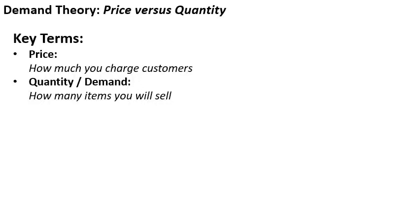The quantity — sometimes known as demand, which is why this is demand theory — is the number of items you will sell, how much of the stuff you're going to be able to shift. That's something you don't directly control. You can't determine exactly how many items you sell. What's important is not how many you manage to make, but how many you manage to sell. And the amount you can sell will usually be determined to a large degree by the price.